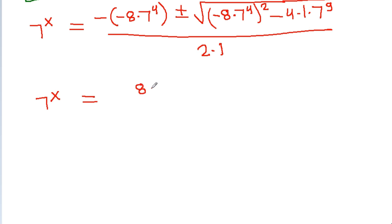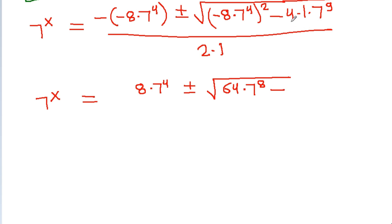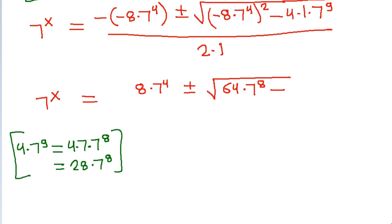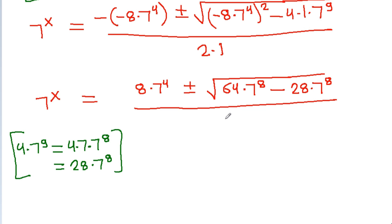Inside the square root: (minus 8 times 7 power 4) squared is 64 times 7 power 8, minus 4 times 7 power 9. And 4 times 7 power 9 equals 4 times 7 times 7 power 8, which is 28 times 7 power 8. So the discriminant becomes 64 minus 28, which is 36 times 7 power 8.